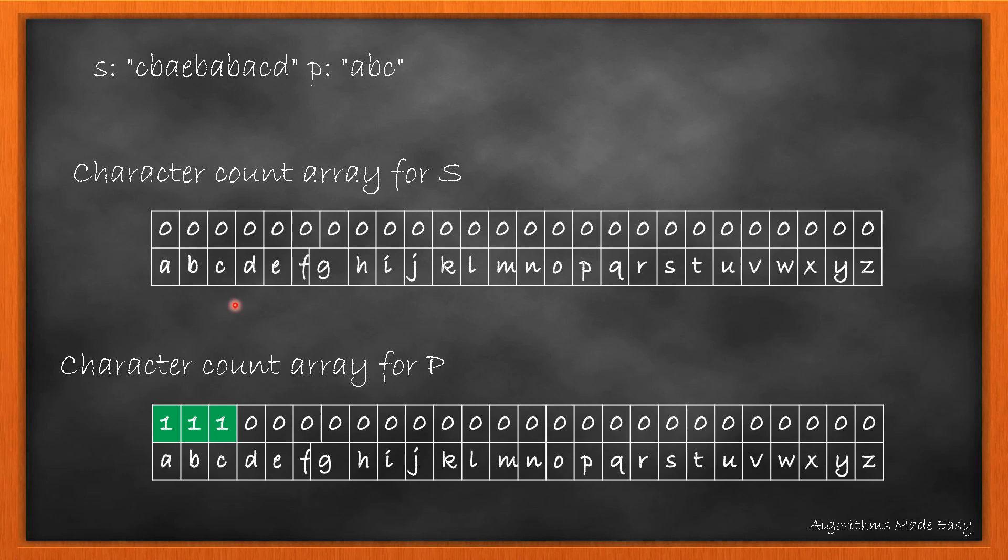Now, we will count the characters in S for size P minus 1 which will give us this array. Now, we will start iterating one character at a time to form a sliding window same as the size of P.